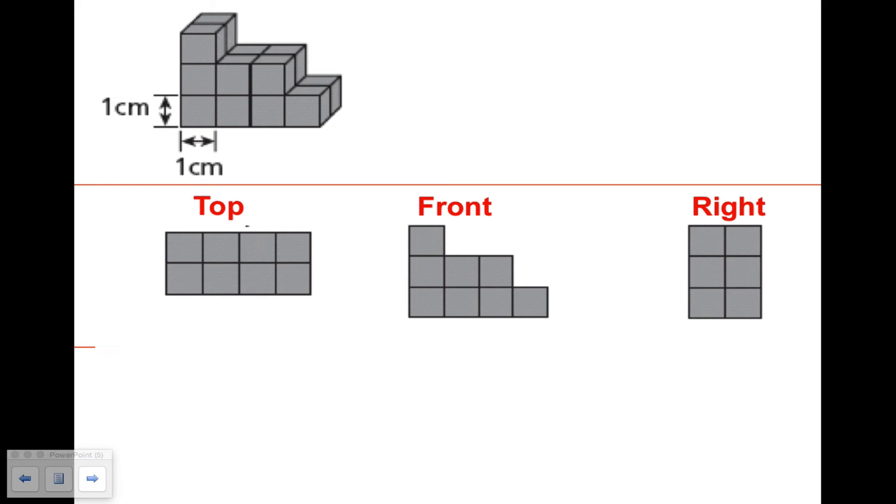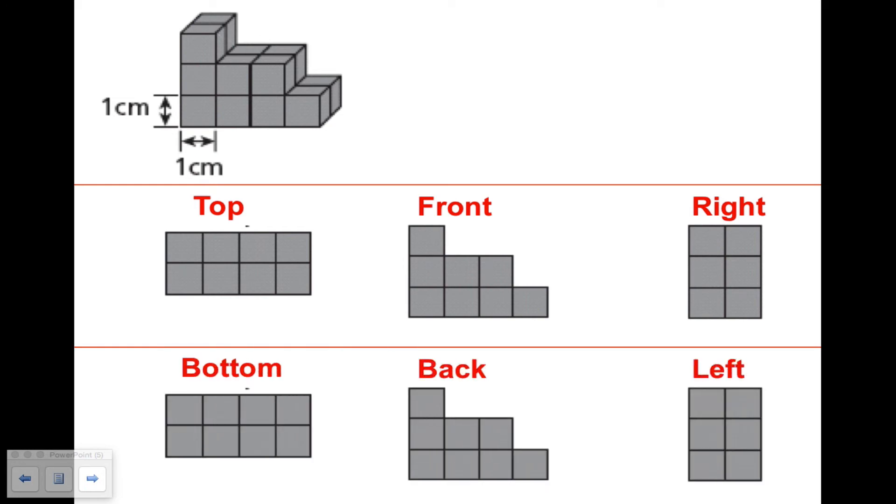Now lucky for us, from the bottom it would look exactly like the top, the back would look like the front, and the left side would look just like the right side. So we could actually count the individual squares, because we're measuring area which is counted in squares, and add them up. So 8 on the top, plus 8 on the bottom, plus 8 on the front, 8 on the back, 6 on the right, 6 on the left, for a total of 44 square centimeters.